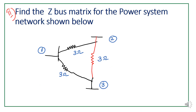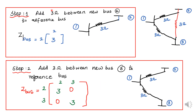Next, I am going to explain problem number 2: Find the Z-bus for the power system network shown below. This consists of 3 buses. Bus number 1 is considered as the reference bus. Remaining buses are 2 and 3, corresponding to 2 buses. The Z-bus is a 2x2 matrix. Step number 1: Add 3 ohm between new bus 2 and reference bus 1. The Z-bus equals 3 — only one element.